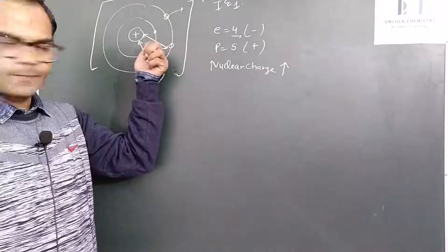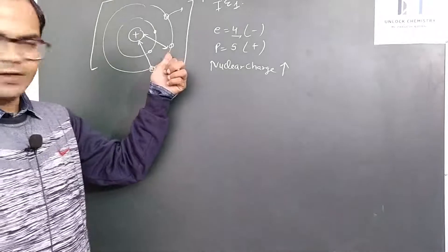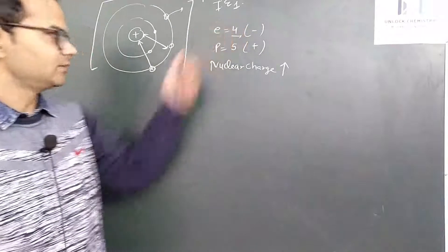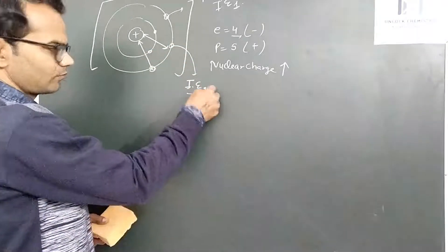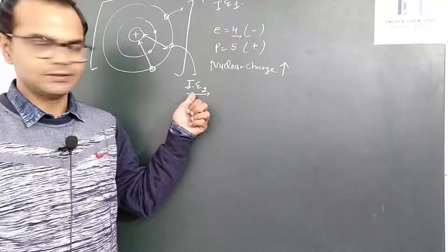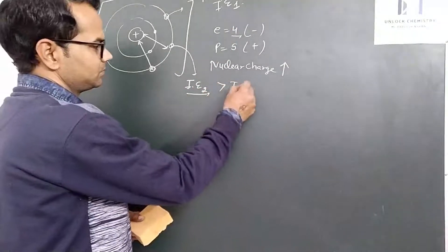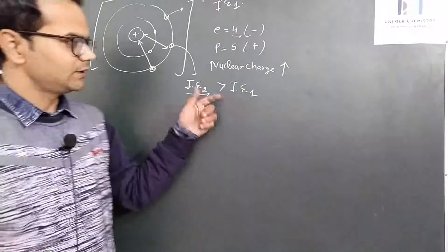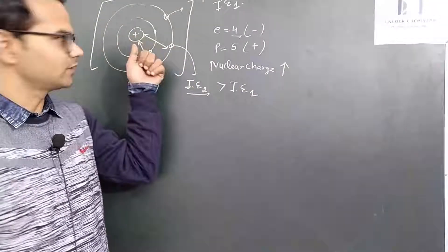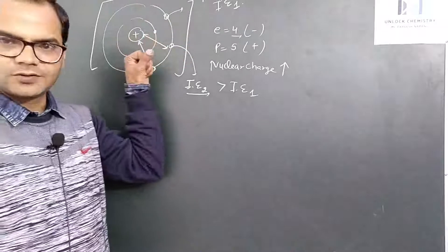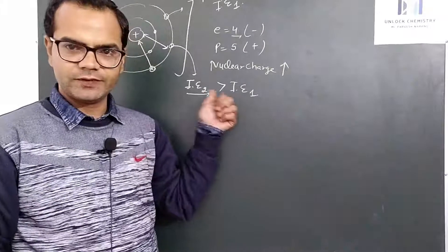The second electron is more attracted to the nucleus due to increased nuclear charge, so it will definitely require higher energy than the first ionization energy. The energy required to remove this electron is IE2, the second ionization energy, and it is higher than the first ionization energy. Why? Because due to increased nuclear charge, the remaining electrons in the valence shell experience more attraction with the nucleus. So the second ionization energy is higher than the first.